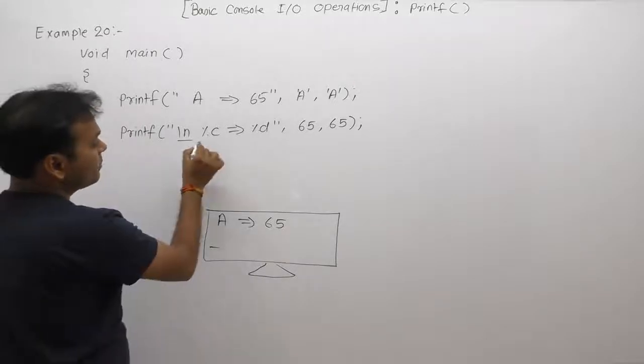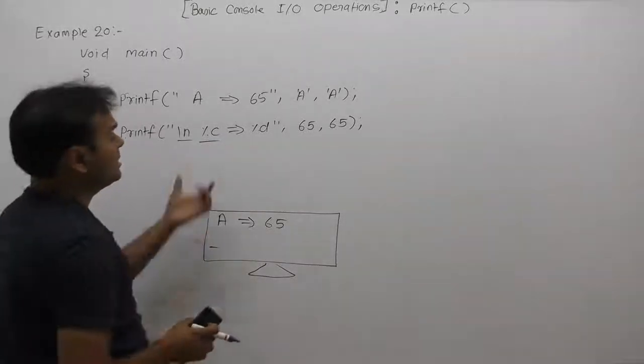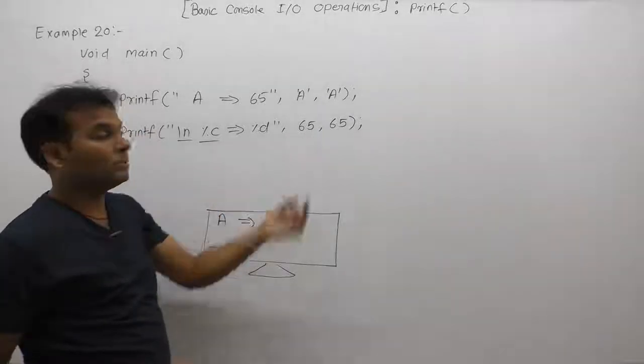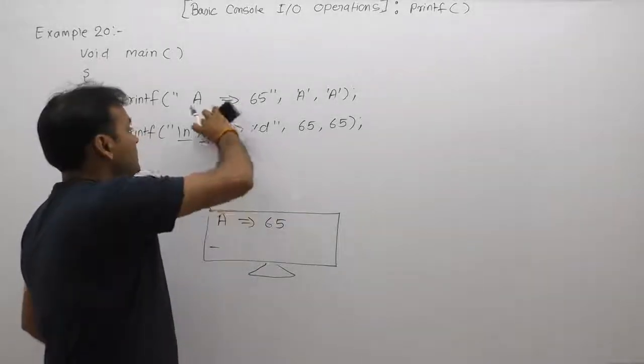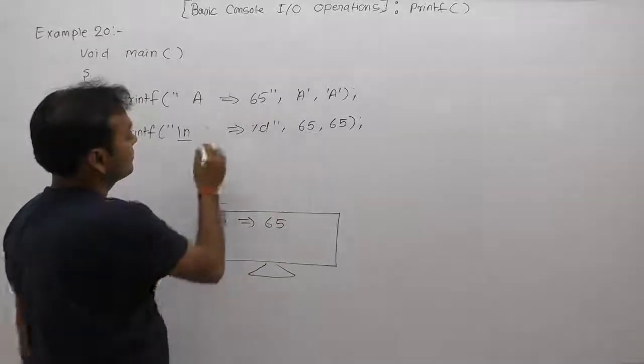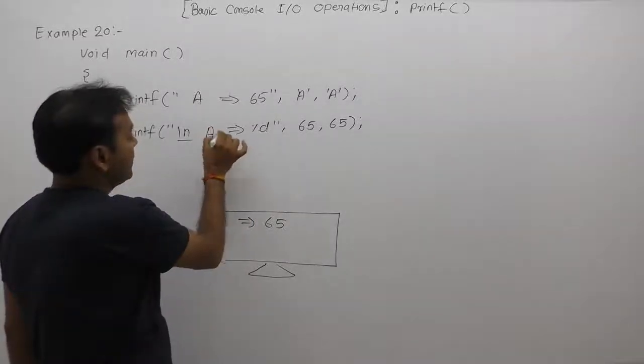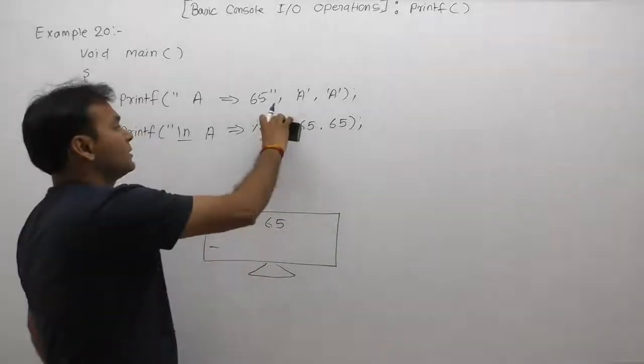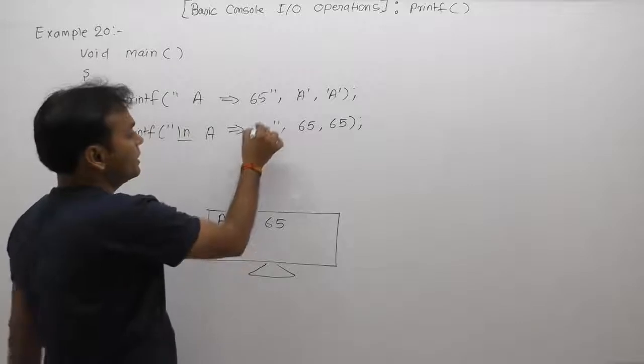Again, in place of %c, what will replace in place of %c? Character value of 65. Its character value is A. Again, in place of %d, directly replace 65 in place of %d.